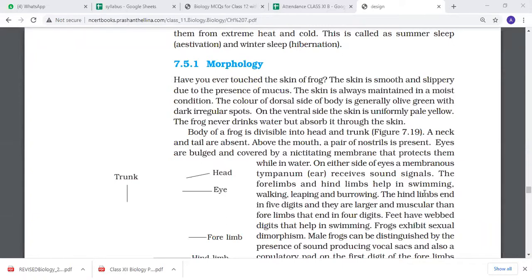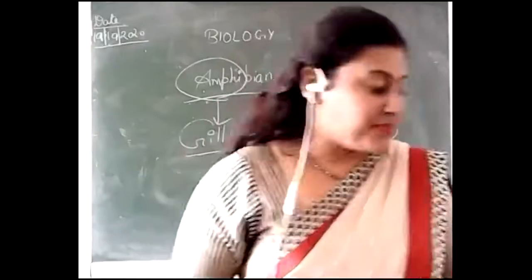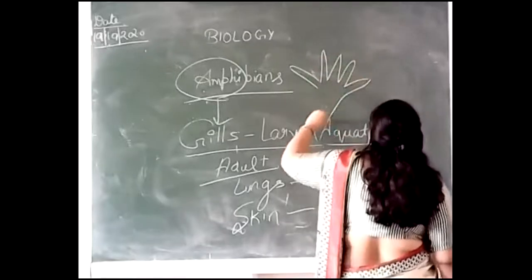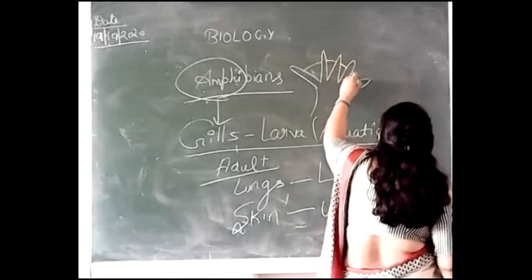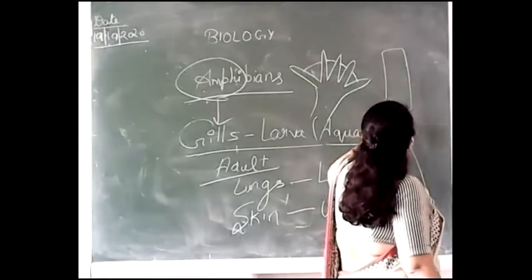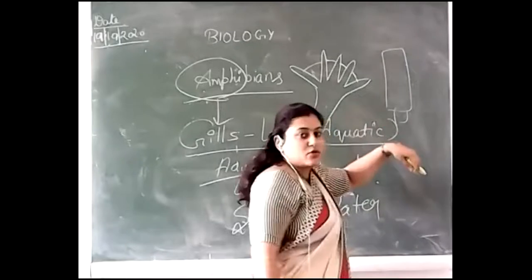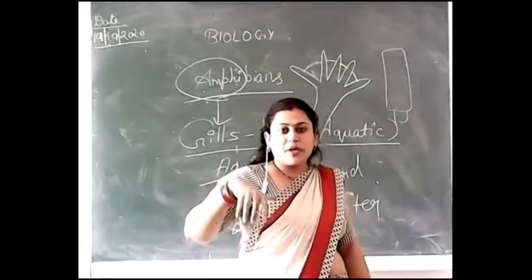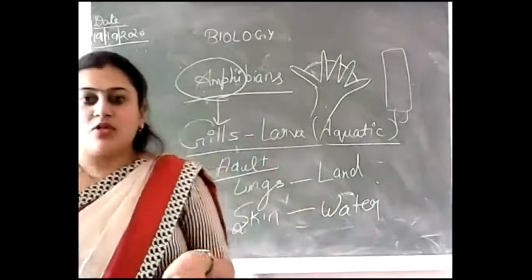The hindlimbs are at the back and have five fingers - they are big and muscular. The forelimbs have four digits. The feet have webbing - webbed feet. Just like when we go swimming we wear swimming fins or flippers on our feet to help move through water, the frog's feet are wrapped with webbing between their fingers so they can swim effectively.